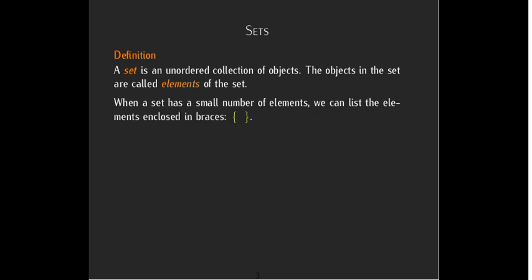The way we write down a set depends on how many elements we have. If we only have a small number of elements, then we may list them out using what's called roster notation. But we enclose that list in brackets. And again, there's no special order.